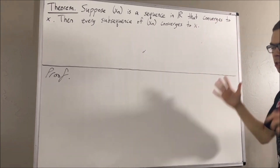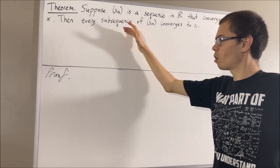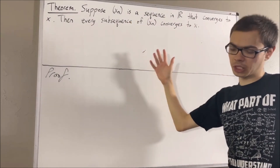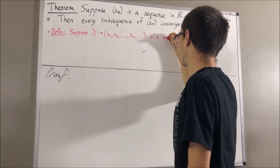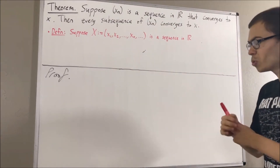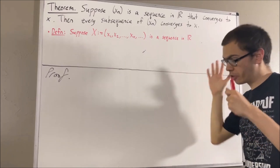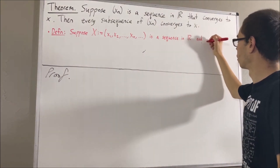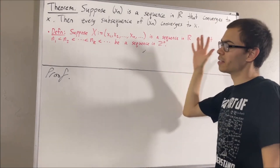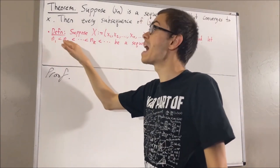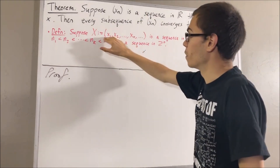Now before we get to the proof, let's remind ourselves of some things. What is the definition of a subsequence? Well, suppose we have a sequence which goes x1, x2, x3, and so on and so forth. And also, suppose we have a strictly increasing sequence of positive integers, which goes n1, n2, n3, and so on and so forth. Then the sequence which goes xn1, xn2, xn3, and so on and so forth, is called a subsequence of the sequence we have here.